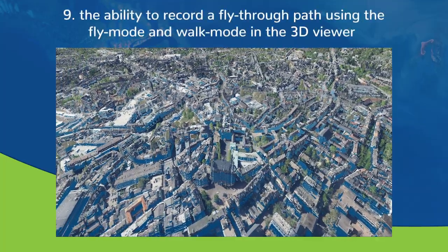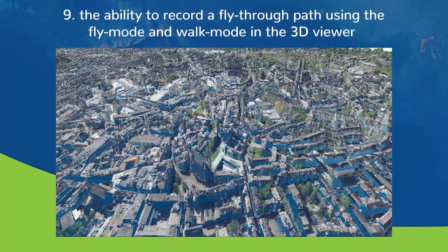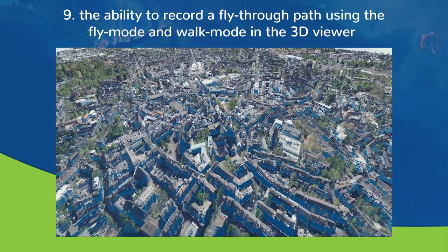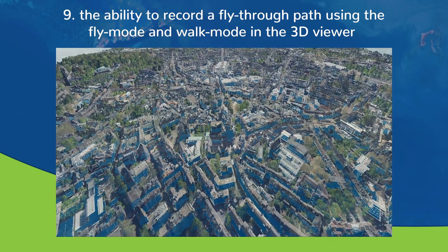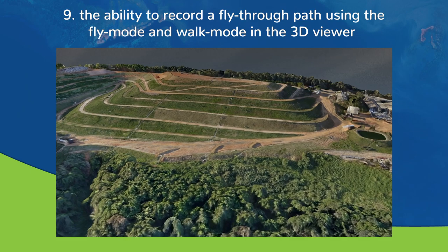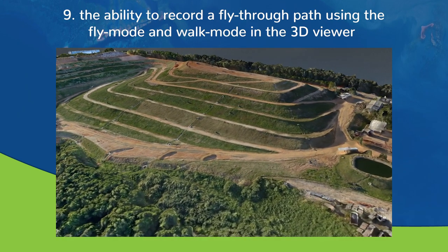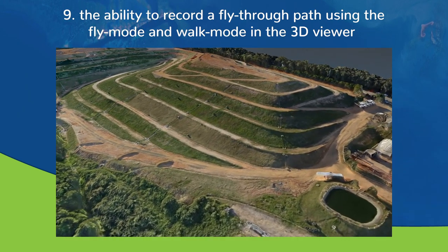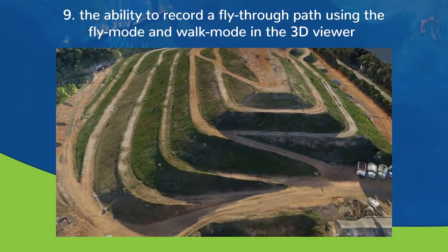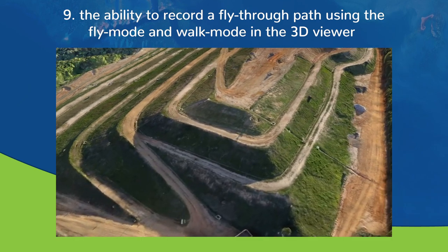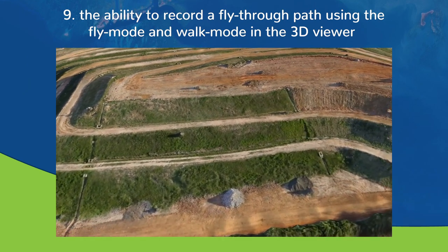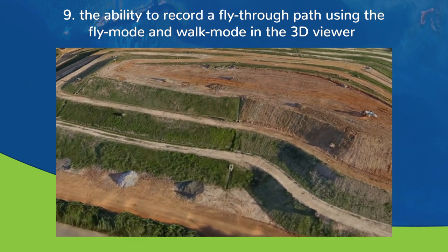Number nine: the ability to record a fly-through path using fly mode and walk mode in the 3D viewer. GlobalMapper is not only able to record fly-through videos, but it also allows users to draw a fly-through path by recording their movements in fly mode and walk mode in the 3D viewer. Since the fly-through feature is an easy way to create videos of 3D data and terrain, it's commonly used for software, real estate and property management, planning, drone or UAV flight paths, or simply creating a compelling presentation of your GIS data to stakeholders.